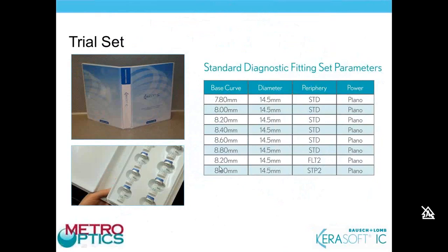The last two lenses in the set are unique lenses for different corneal shapes. The 8.6 steep-2 lens has a relatively flat base curve of 8.6 with a steep periphery equivalent to an 8.2 standard lens — a reverse geometry configuration. This is used for corneal transplants or oblate corneas from refractive surgery, such as post-RK, post-LASIK, or post-PRK cases where the overall corneal profile is oblate even if there's inferior steepening.